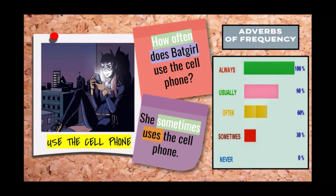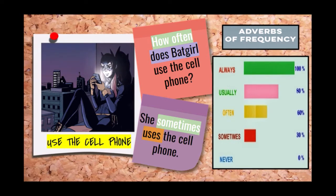Now take a look at my example with Batgirl. How often does Batgirl use the cell phone? She sometimes uses the cell phone. With what frequency does Batgirl use her cell phone? Sometimes — that is the frequency. She sometimes uses the cell phone.